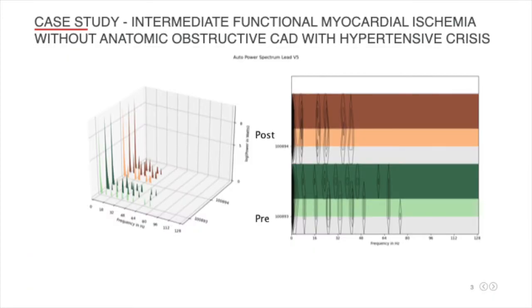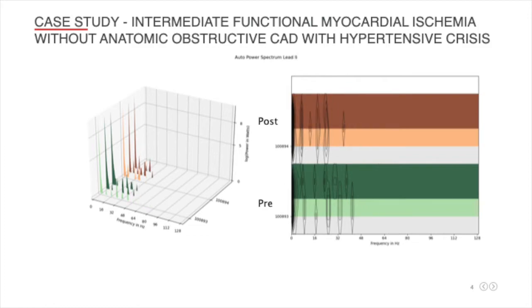These are graphical representations of the auto-power spectra measurements from both of the patient sessions. MCG understands the unique expressions of cardiovascular systems by breaking down electrical signals of the heart into frequency bands that can be viewed and measured by the analysis engine. From here, the engine measures the peaks, troughs, interpeak intervals, and overall power output. These slides demonstrate a resolution of the higher frequency peaks as part of the functional change to the heart following sublingual nitroglycerin treatment.